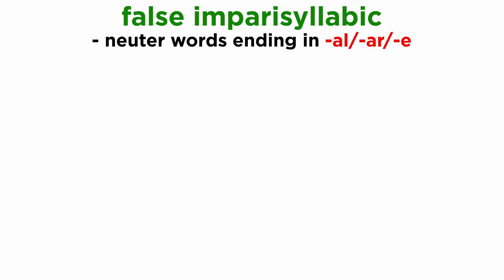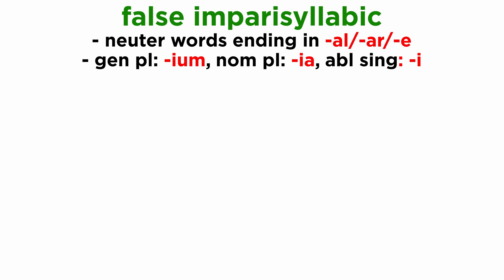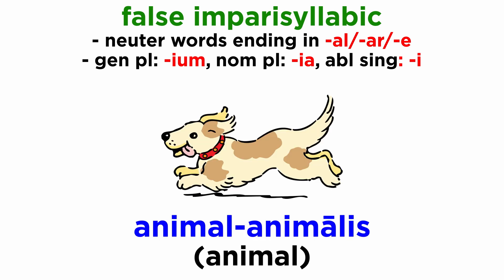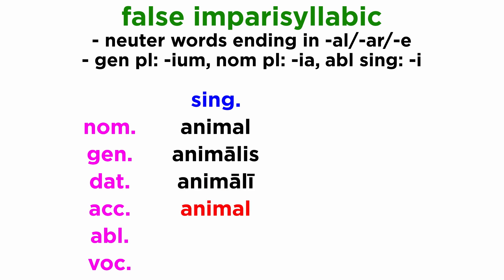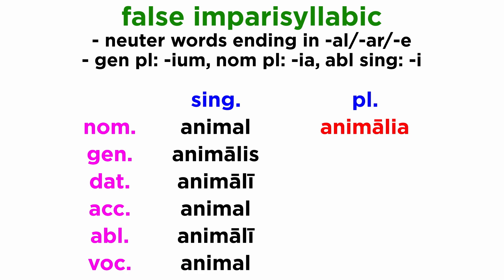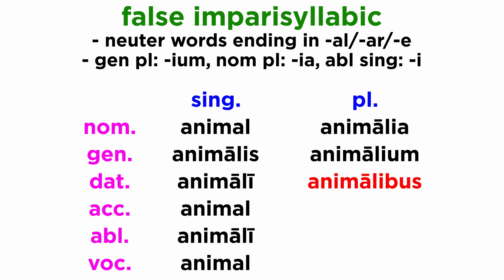Then there are neuter words ending in -al, -ar, or -e, which will also have a genitive plural ending in -ium. These nouns have a nominative plural ending in -ia and an ablative singular ending in -i. A good example is the word animal, animalis, meaning animal: animal, animalis, animali, animal, animali, animal, animalia, animalium, animalibus, animalia.